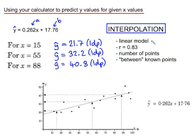Firstly, is it appropriate to use a linear model? Well, we calculated an r value and it was 0.83 to two decimal places, which is strong positive correlation, meaning that a linear model is appropriate.